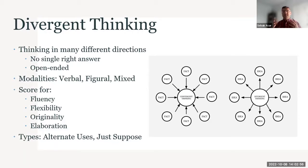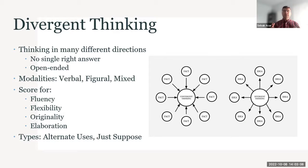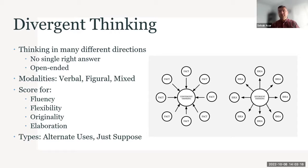Fluency is how many ideas participants have — the more ideas, the better. Flexibility is the variety of ideas. Originality means you come up with ideas other people don't. Elaboration means some ideas are more elaborate and elegant than others. We have different types of divergent thinking tests — there isn't just one kind. That's actually the question I was most curious about: should I take one test over another if it has a lower correlation with SES?